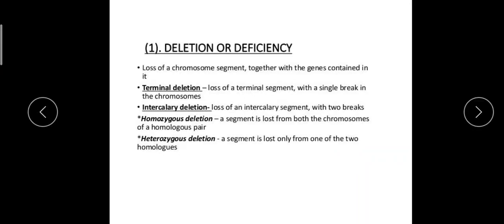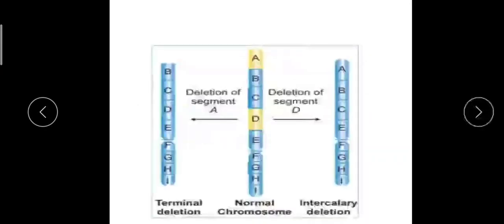Deletion can also be of two types based on homozygosity: homozygous and heterozygous. Homozygous deletion is when a segment is lost from both chromosomes of a homologous pair. Heterozygous deletion is when the deletion occurs in only one chromosome of the homologous pair — one chromosome will have that gene and the other will not.